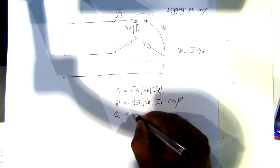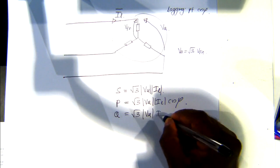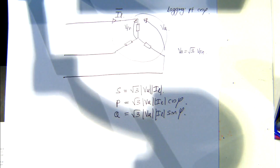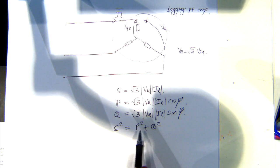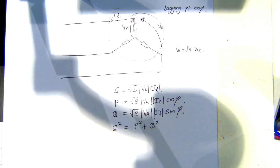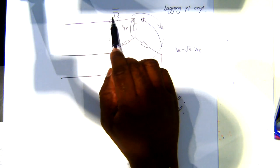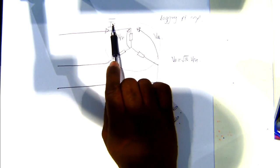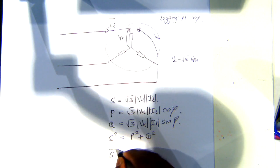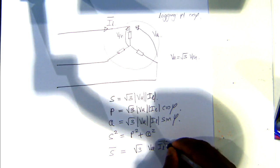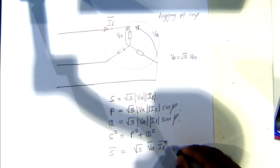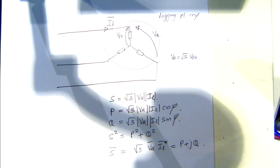The reactive power will be root three times V_line-to-line times I_line times sin phi. And then the apparent power will be the square root of real power squared plus reactive power squared. Also, the complex power relationship: if you have a phasor quantity for the line current, you can write the complex power S as root three times V_line-to-line times I_line conjugate. This is a complex calculation which will give you P plus jQ eventually.